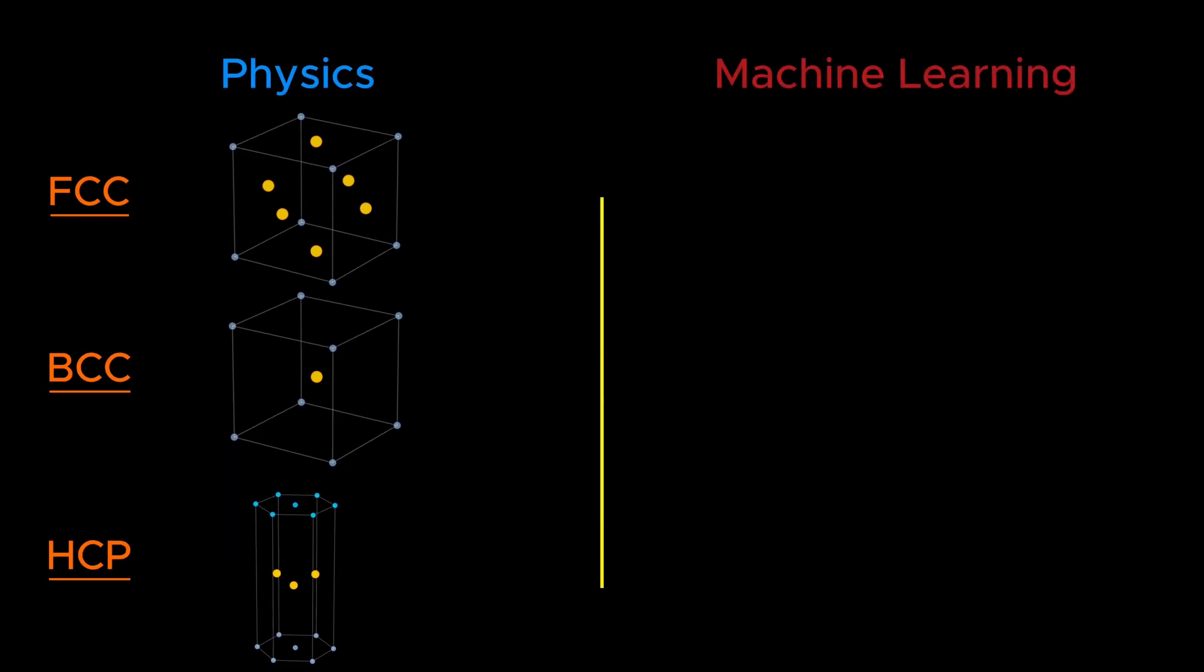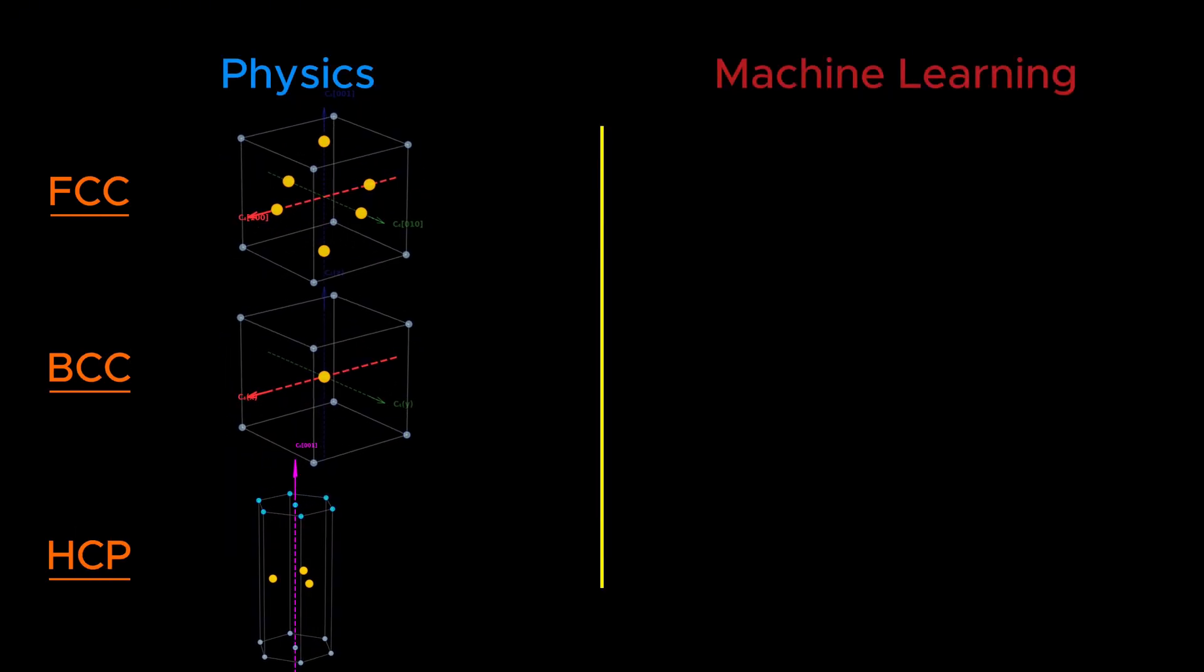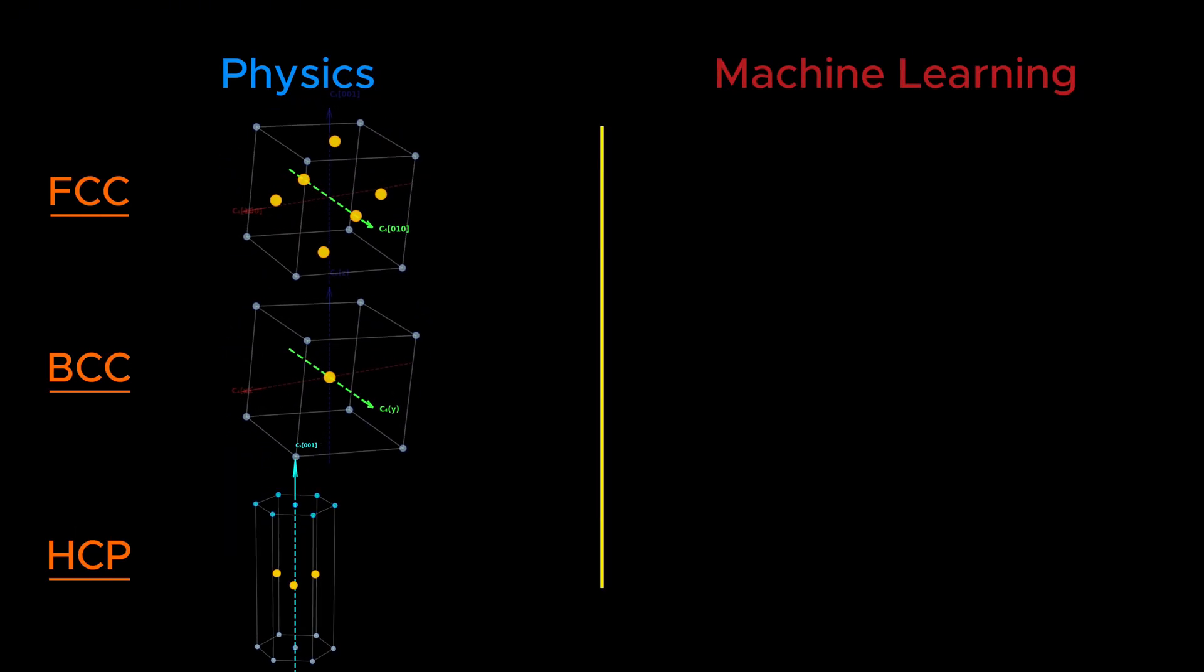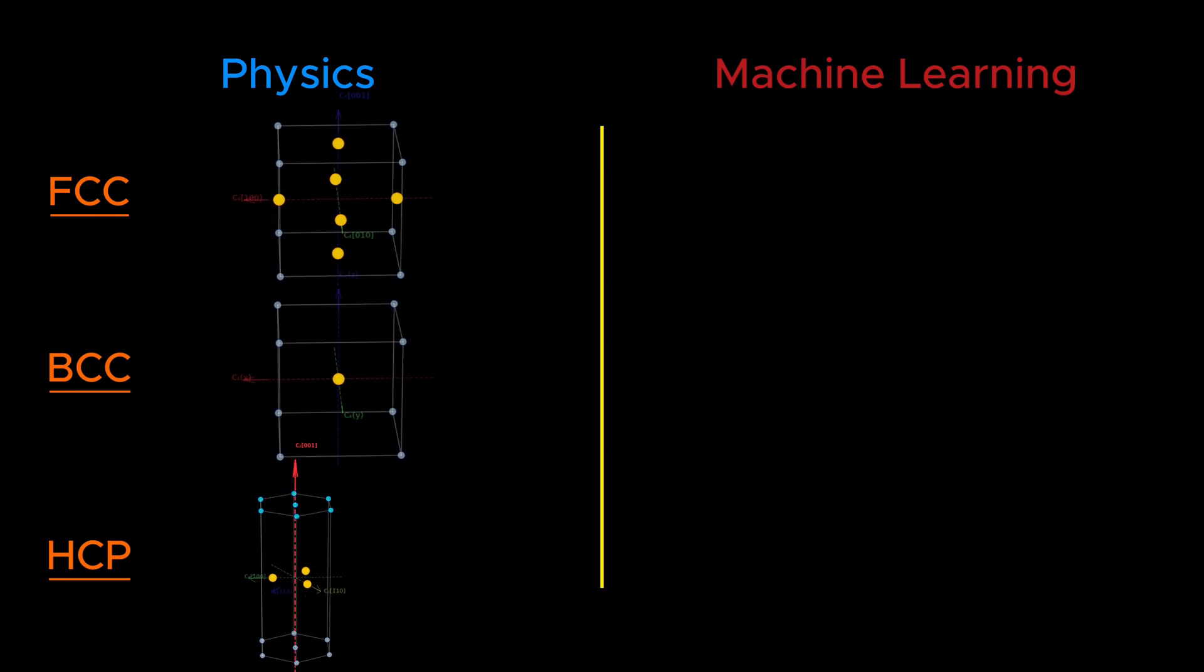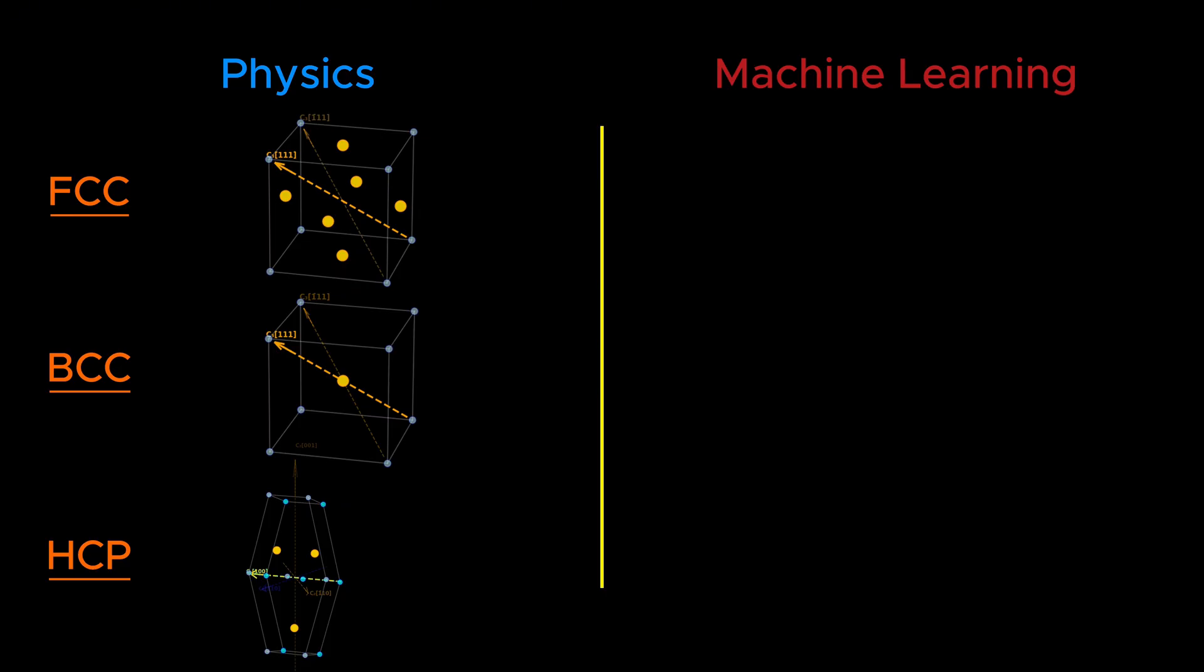Now, let's bring the two worlds together. In crystallography, physicists classify materials using symmetry. They ask: What transformations can I apply so the crystal looks unchanged? In machine learning, KNN classifies by similarity. It asks: Which labeled examples are closest to this new example? Physics uses symmetry. Machine learning uses similarity. But which method is better?